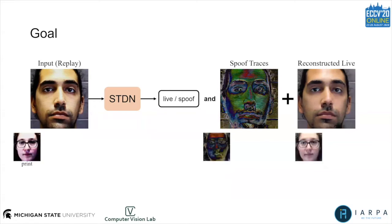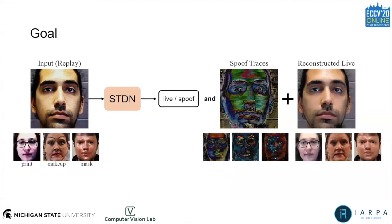To address those problems, we are motivated by exploring the subtle patterns introduced by the spoof mediums, such as digital screen, printed photograph, or mask. We call those patterns a spoof trace. The spoof trace can visually explain why a spoof is a spoof. For example, the spoof trace for replay attack contains high-frequency moiré patterns. The spoof trace for print attack is mainly based on color distortion. The spoof trace for makeup consists of artificial makeup strokes, such as eyebrows.